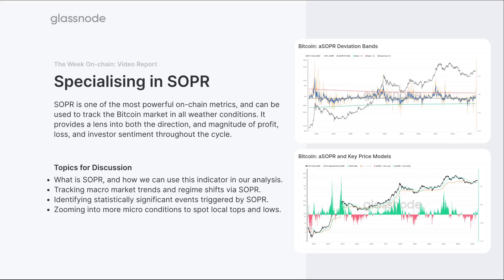SOPR is a bit of an all-weather indicator. We can use it in bullish markets, bearish markets, and transitional markets. We can use it to identify transitions between these different regimes. We can also look at it as micro-overheated and micro-underheated. In a bull market we can spot areas where it's getting overheated and when corrections may be complete. In a bear market, you can do the exact opposite — look for points of resistance and areas of capitulation. Please give us a rate, a share, and a subscribe.